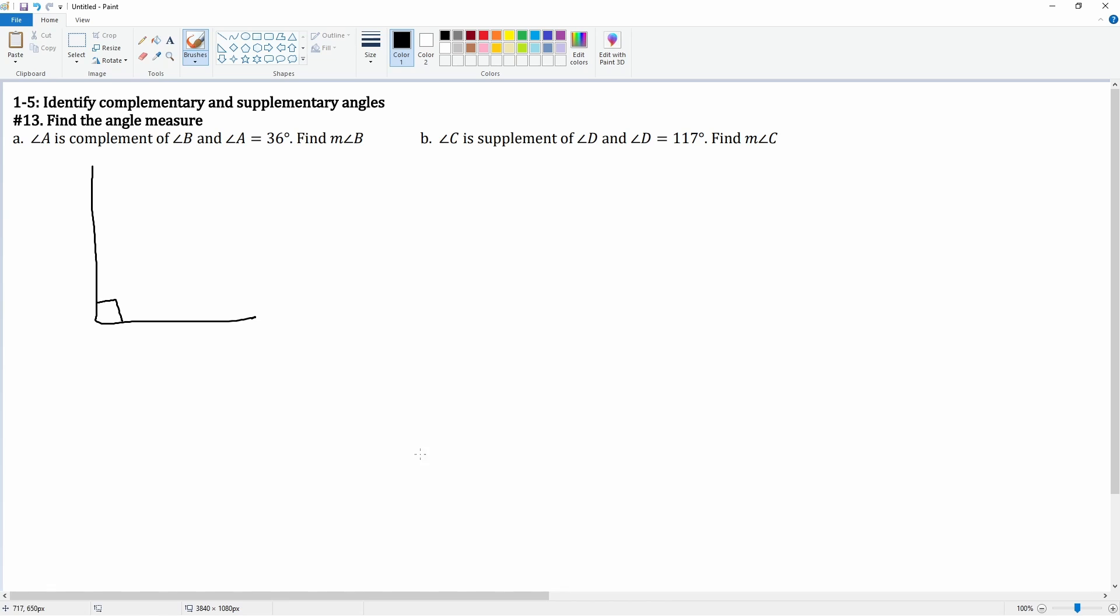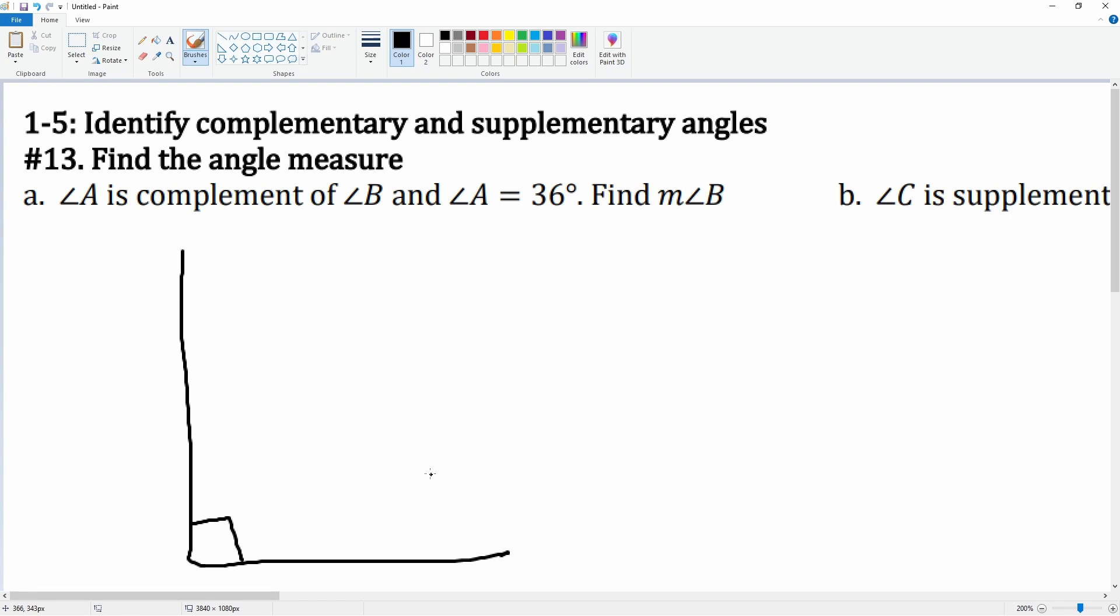Then we can now label that angle A is complementary, so this can be angle A. That's complementary to angle B. They form that 90 degree angle.